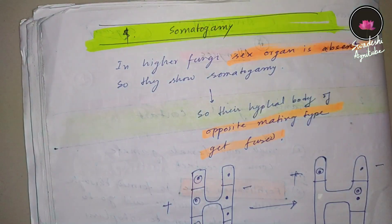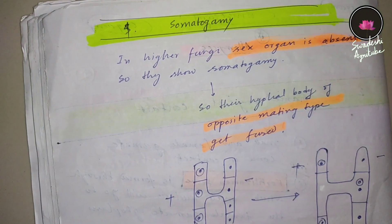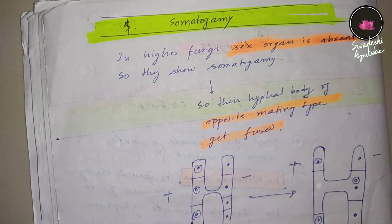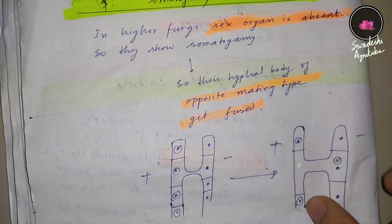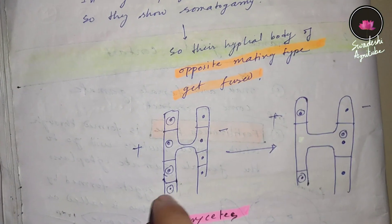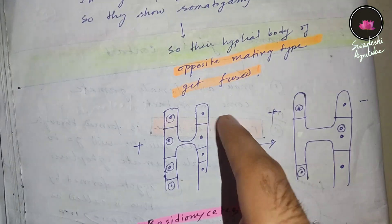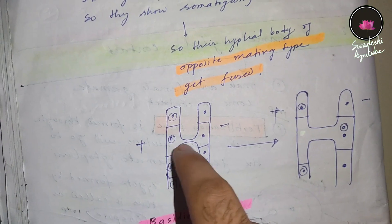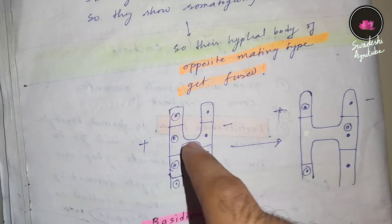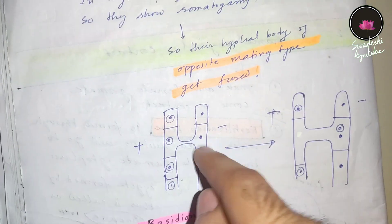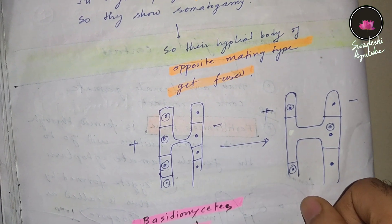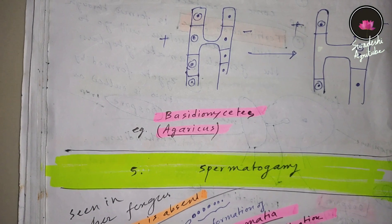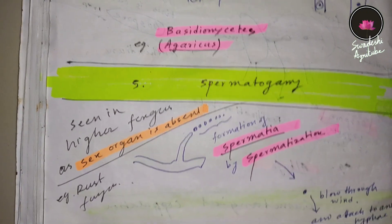The fourth type is somatogamy. Higher fungi lack sex organs, but they still carry out sexual reproduction through somatogamy. In this case, opposite mating type hyphae — not sex organs — come into contact, a tube is formed, and the nucleus from the plus hypha enters the minus hypha. After that, karyogamy happens, the nuclei fuse to produce 2n, and gametes are formed. Somatogamy is shown by basidiomycetes, and one example is Agaricus.